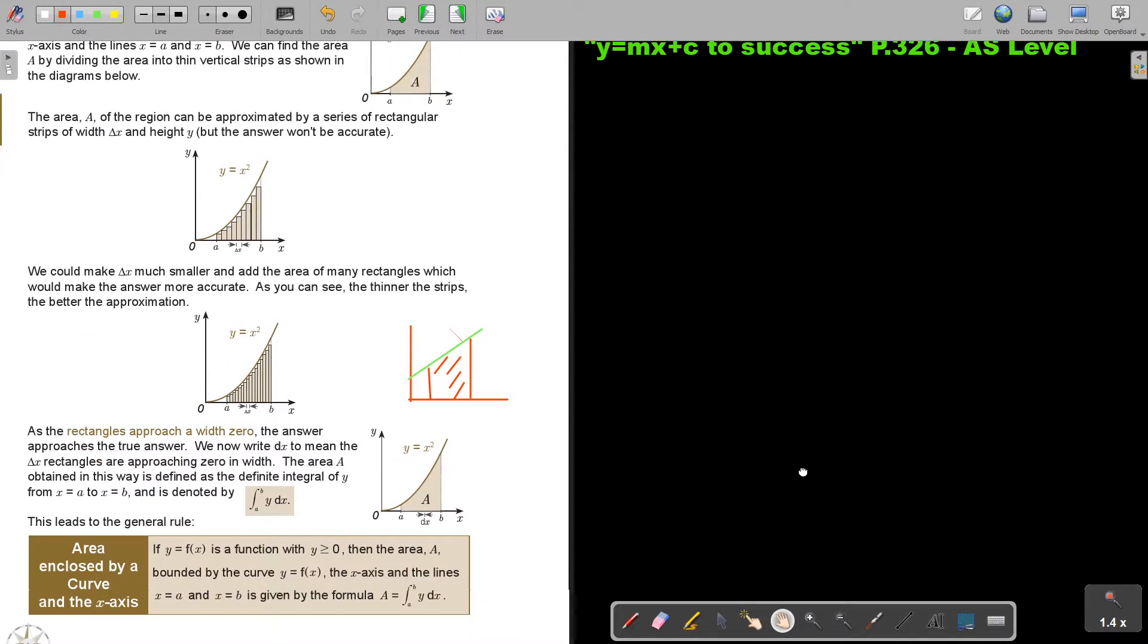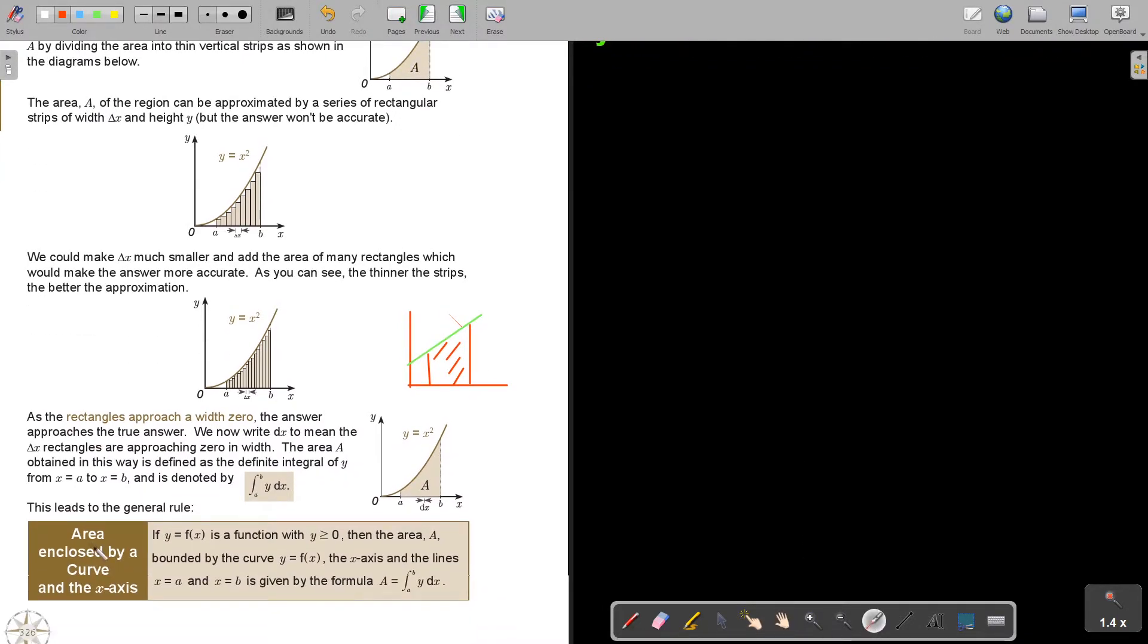Let's just go for the formula. The area enclosed by a curve and the x-axis. If y equals f(x) is a function with y greater than or equal to zero, then the area A bounded by the curve and the x-axis and the lines x equals A and x equals B is given by that. There's your boundaries there, and I will just integrate it, substitute it, and find the area.